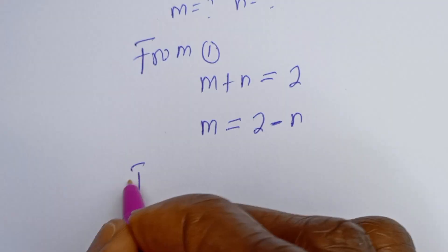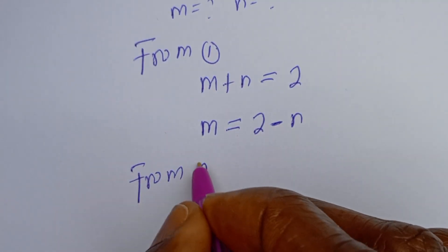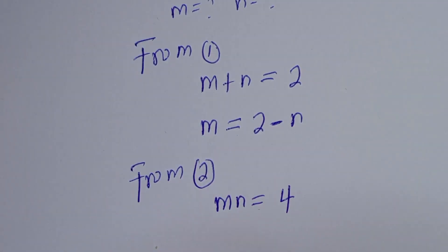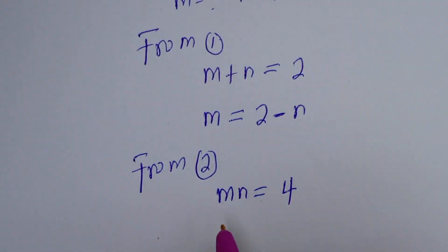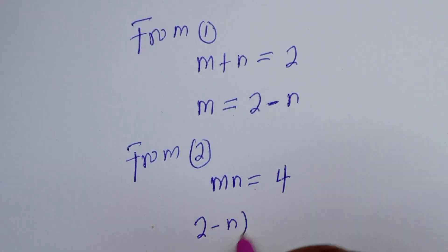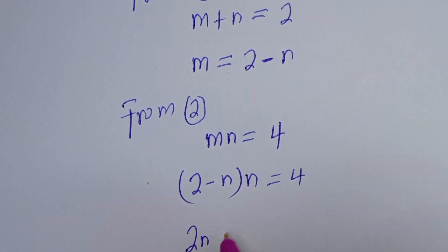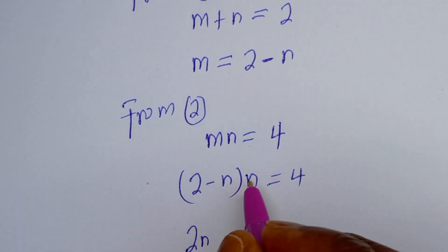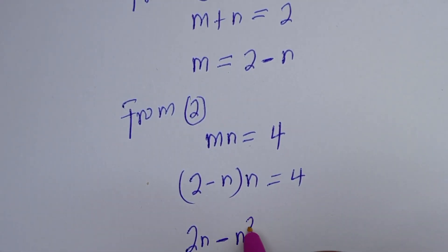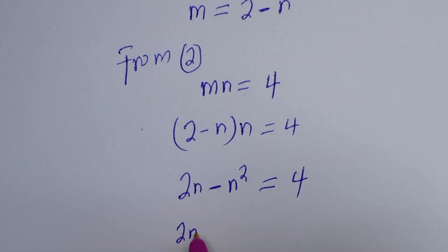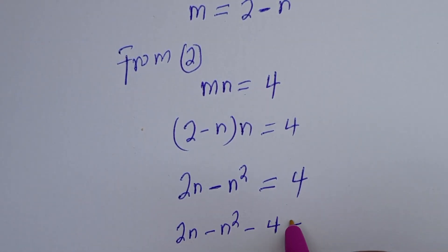From equation 2, m n equals 4. When m is equal to 2 minus n, we have (2 minus n) times n equals 4. Let's open the bracket: 2 multiplied by n is 2n, then minus n multiplied by n, that is minus n squared, equals 4. Let's bring this 4 to this side.